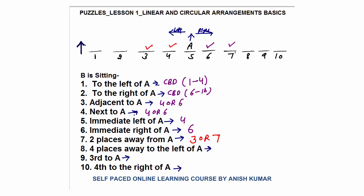Question: four places away to the left of A. Counting from A: first place, second place, third place, fourth place — so if B is sitting four places away to the left of A, B would be sitting at seat number one. Here I can confirm B is sitting at seat number one.